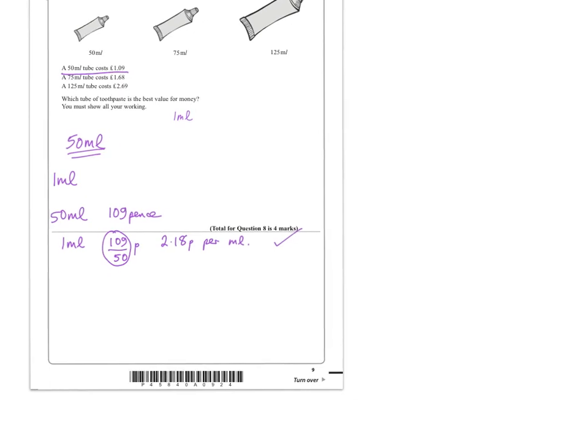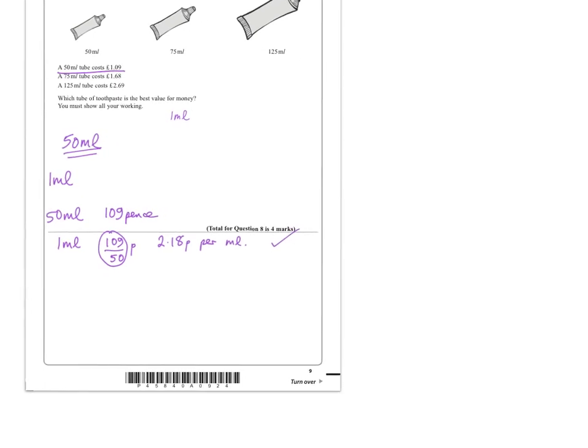And then we can look at the 75 milliliter toothpaste. Now 75 milliliters, then if we want to work out what one milliliter is, so let's set our working out like this: 75 milliliters, it says it costs £1.68 which is 168 pence. And then if we want what one milliliter is, then we can divide both sides here of this proportion by 75. And we'd have 168 divided by 75, i.e. 75 times smaller. And again we can reach for our calculator. 168 divided by 75, and that would give us 2.24 p per milliliter.